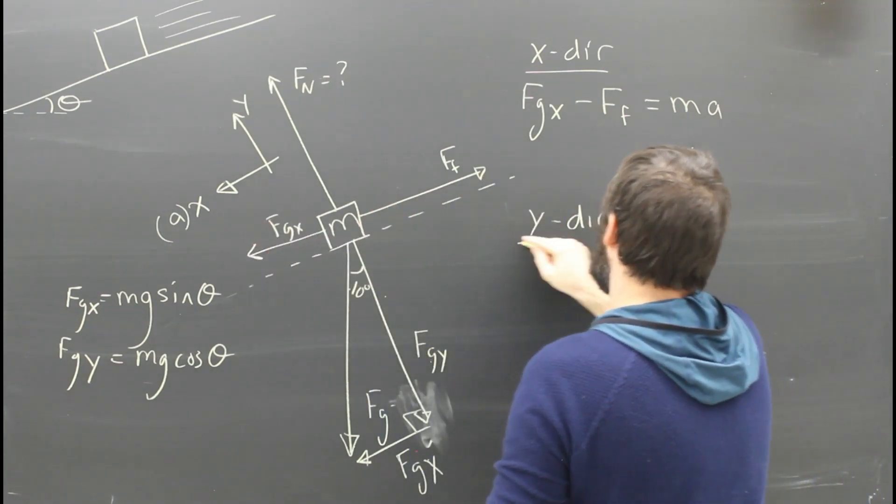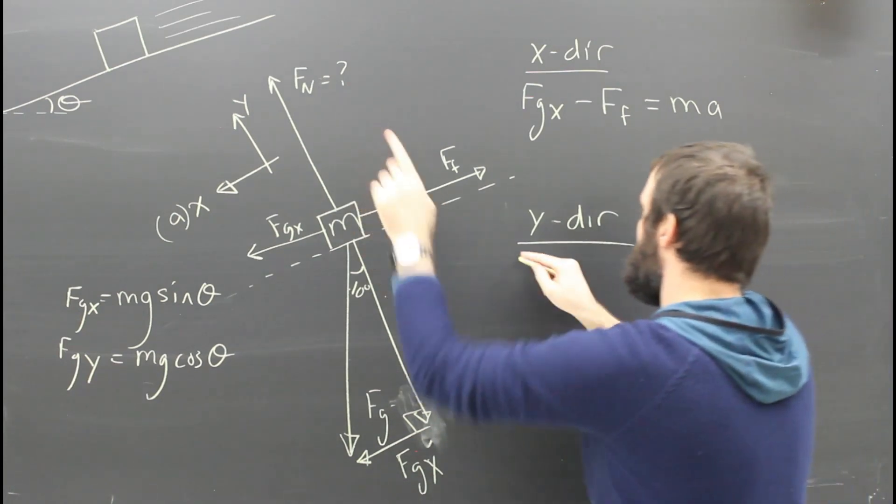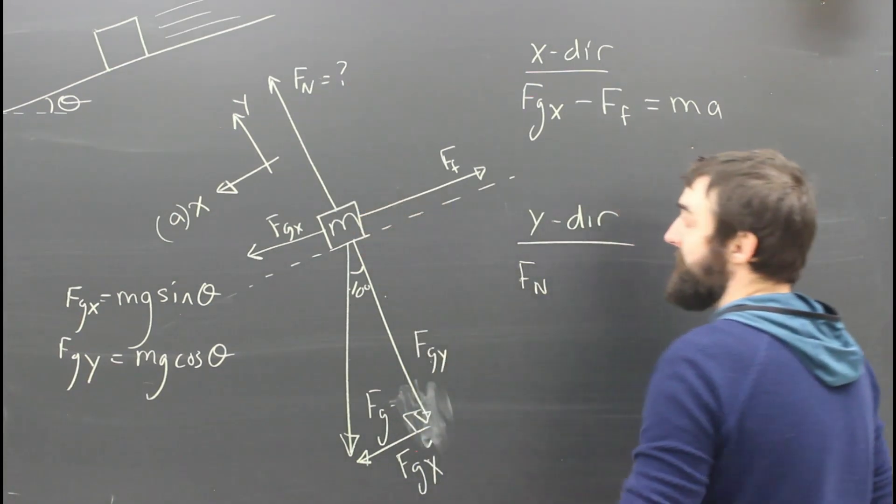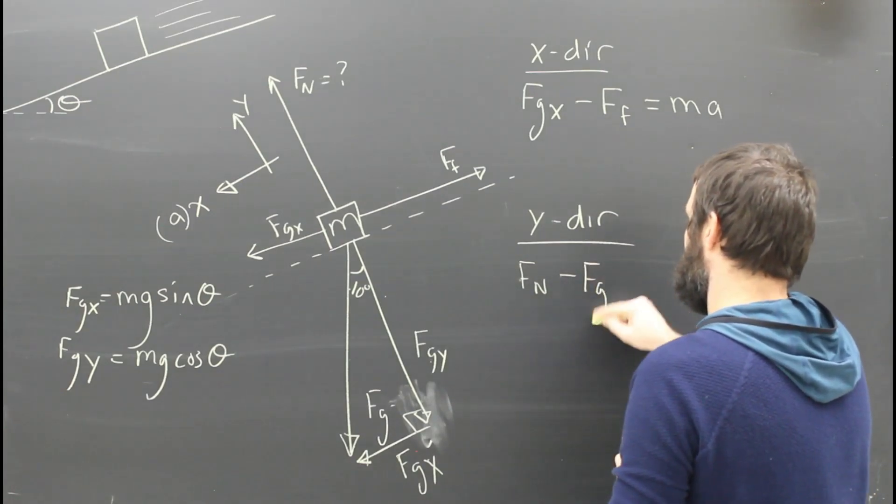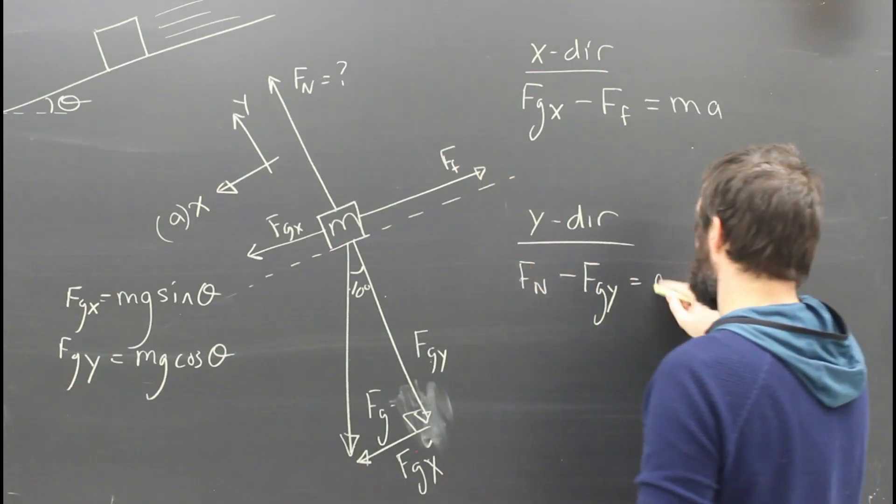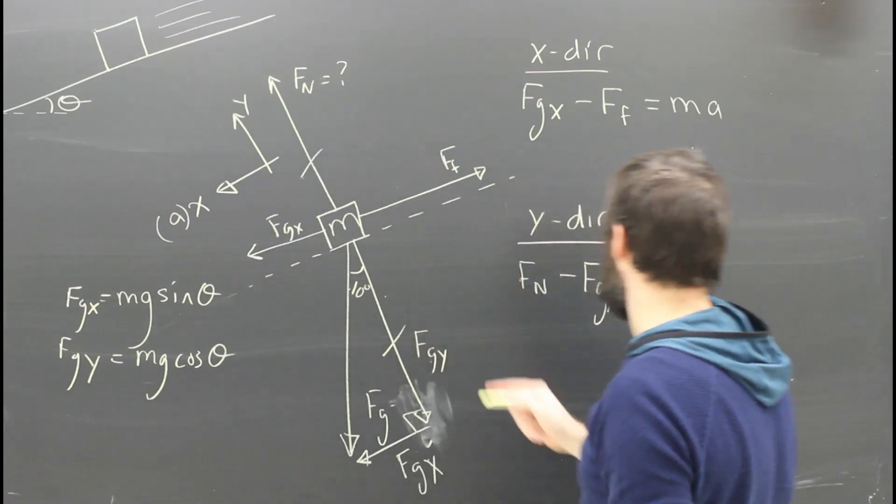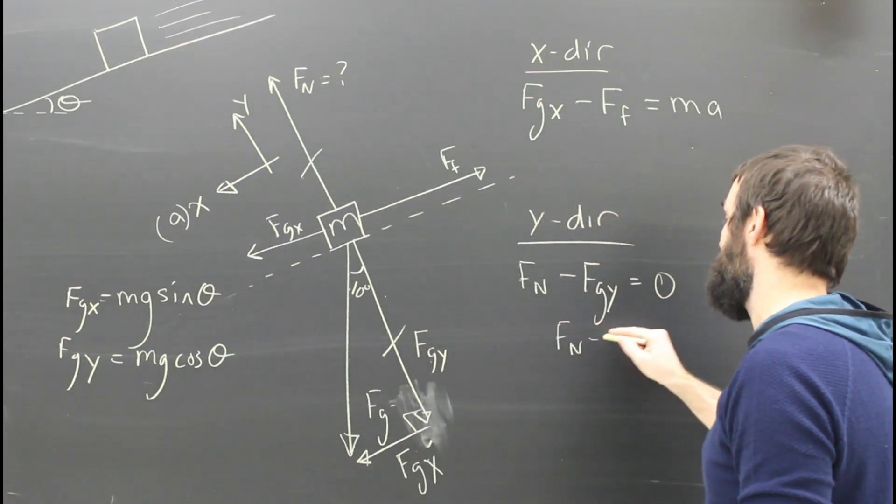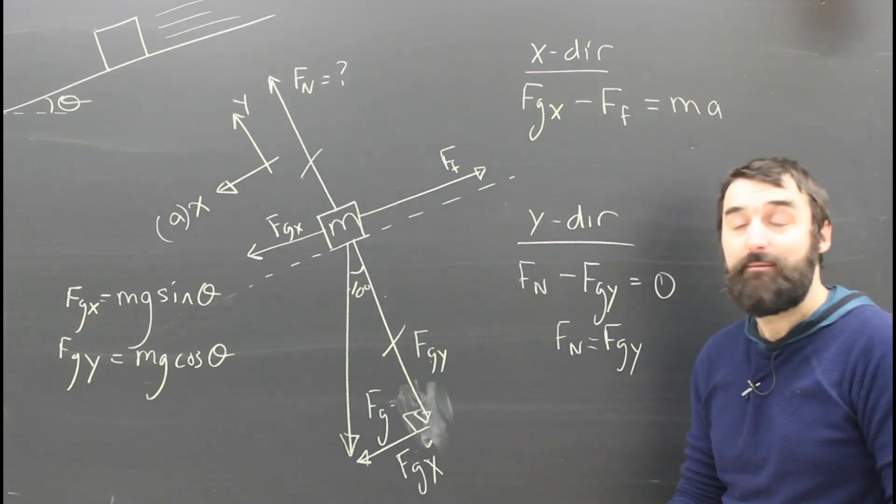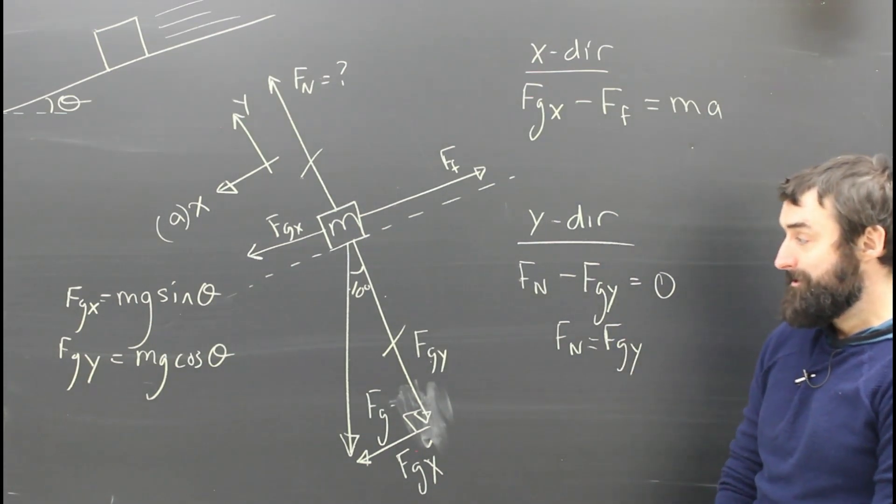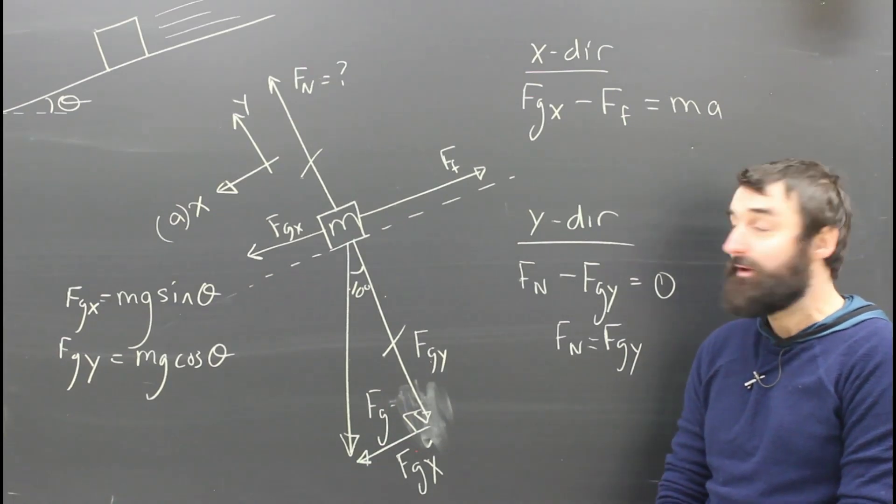What's the y direction equation? We've got Fn, and in the negative y direction we have Fgy. Those are the only two forces, so they're going to be equal to zero. They are going to balance out. In this case, Fn is going to be equal to not Fg, but to Fgy, to mg cos theta. Anything else I want to point out here?